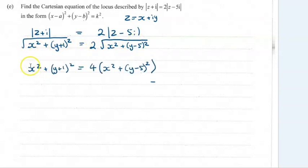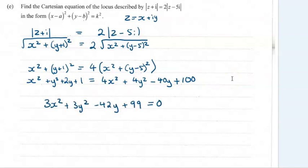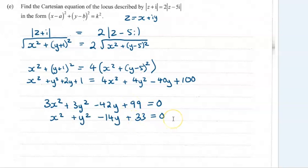We're going to square both sides — for the square root part it just removes the square root, but don't forget the 2 also needs to be squared. Expanding out, we start moving things around, collecting like terms, cancelling things out. We end up moving everything to the left hand side and simplifying. All of that can be divided by 3.